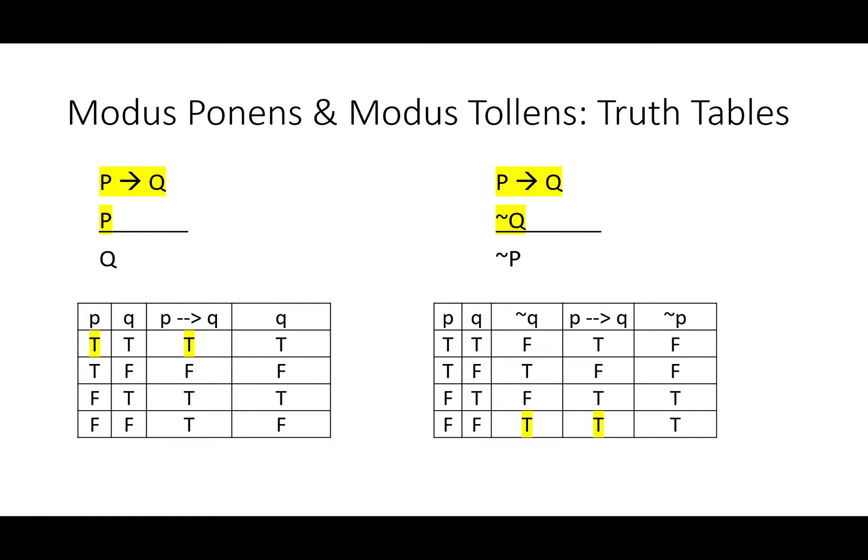In each of these truth tables, the other rows don't matter because there's at least one false premise. We check and see: is there a true conclusion? It turns out in both cases there is. You can't have these premises without getting that conclusion, which means we know these rules work — they've been tested with an infallible truth table method.